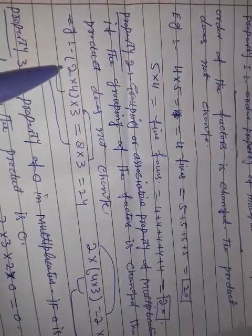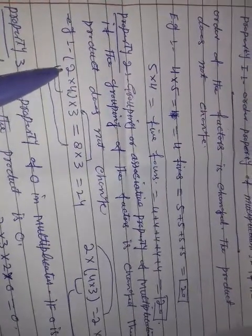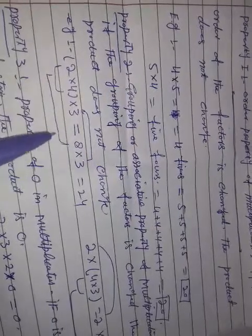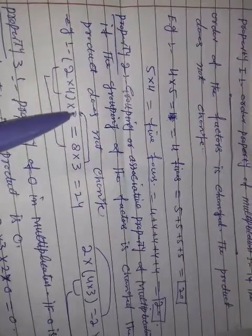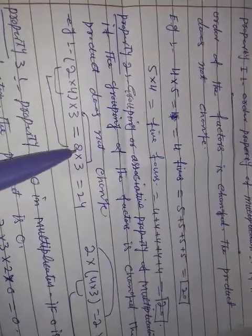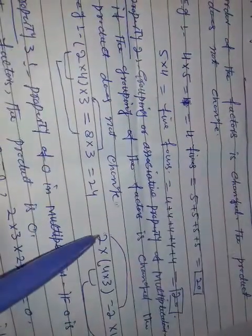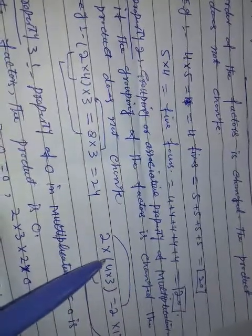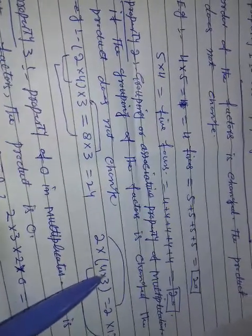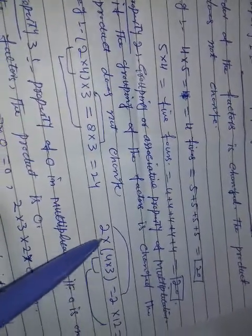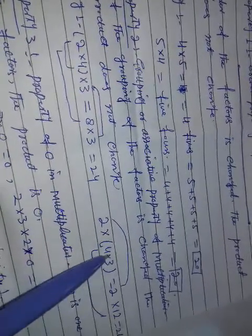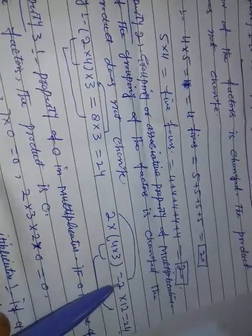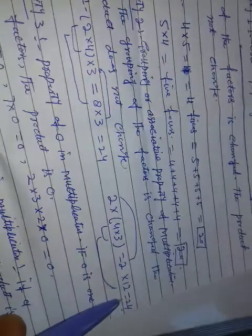First multiplication is 2 into 4, so 2 fours are 8. Then multiply by 3, so 8 threes are 24.